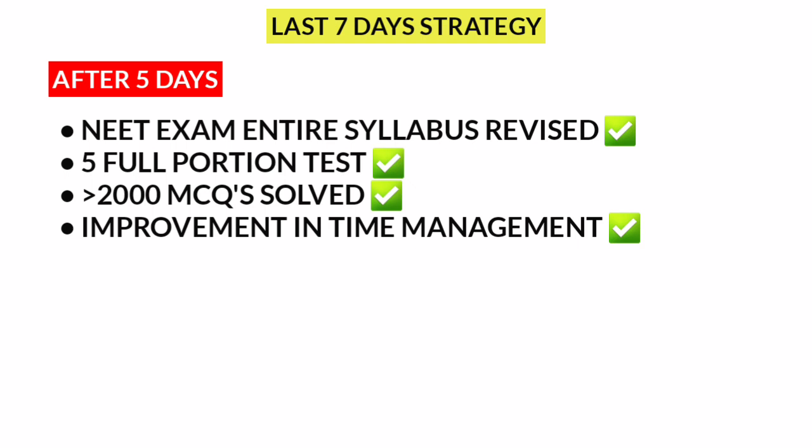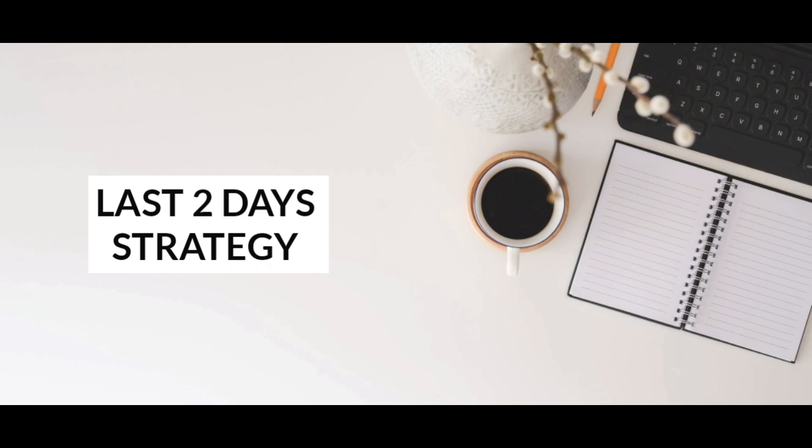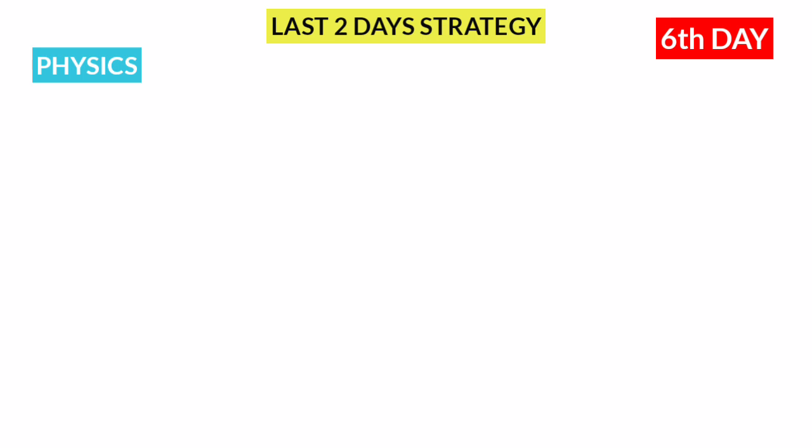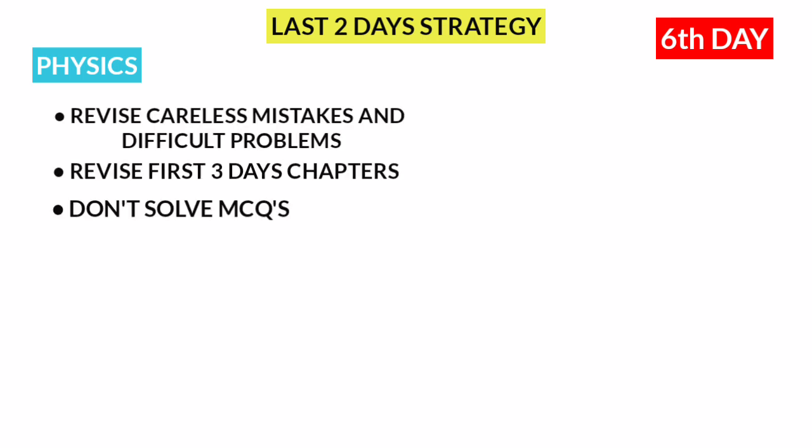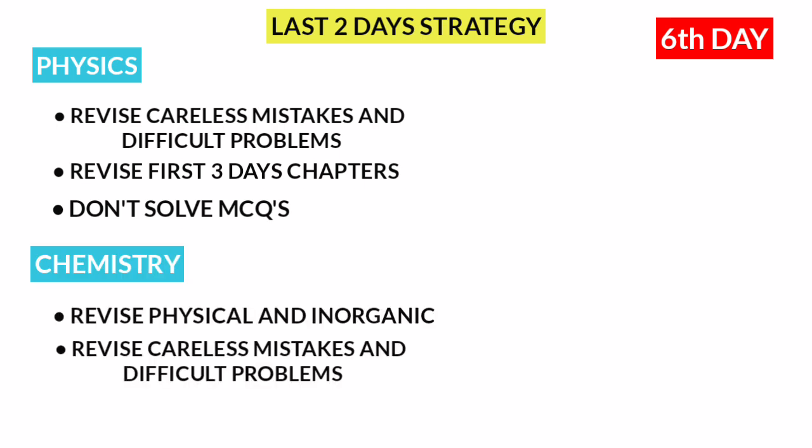Next, what is the last two days strategy? For the last two days, follow a specific timetable. For physics: during the five days you would have marked questions where you made mistakes — now revise those chapters. For chemistry: revise Physical and Inorganic chapters faster. Review questions you found difficult in the five days, and go over your noted mistakes on paper.